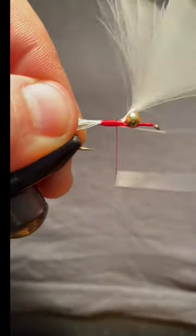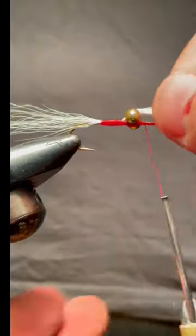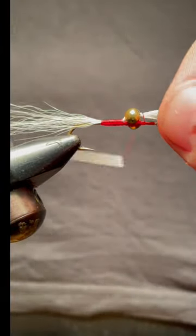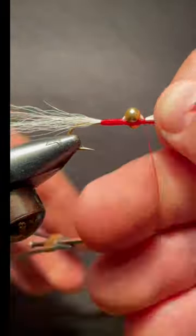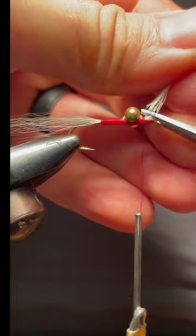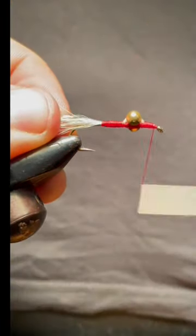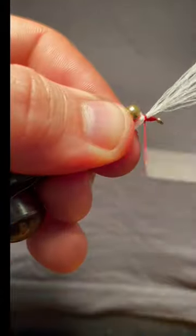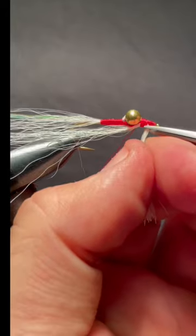The tail of the fly is natural bucktail with 4 strands of flashaboo attached. When tying in your tails, make sure to thoroughly cover the bucktail with red thread to make a nice red throat on this fly.